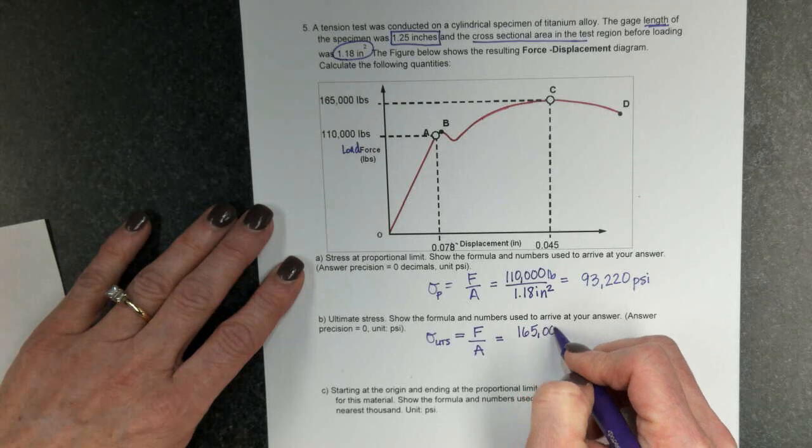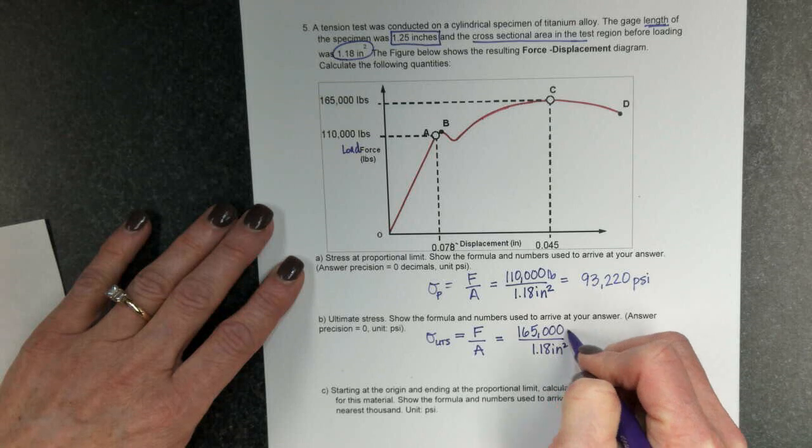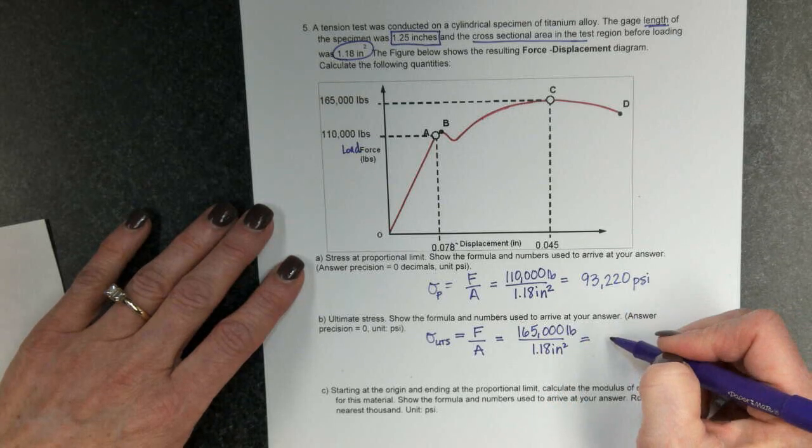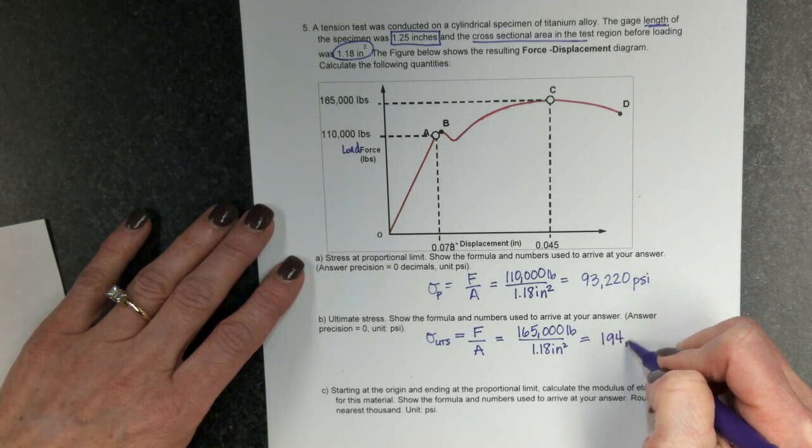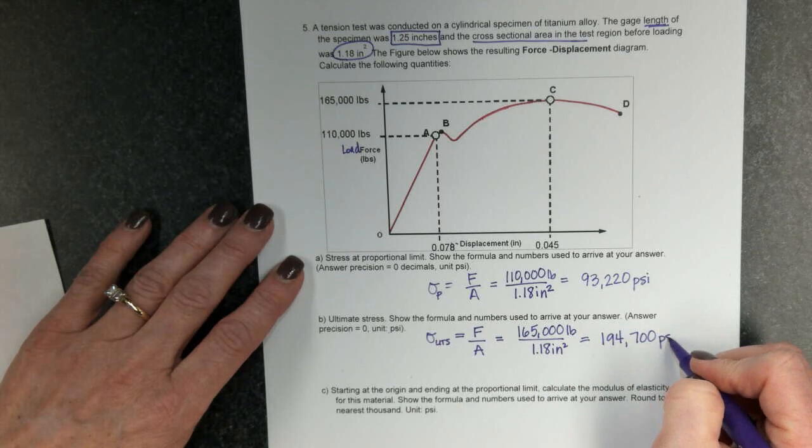And I need to divide by my cross-sectional area. When I do 165,000 pounds, divided by 1.18 inches squared, I get 194,700 pounds per square inch, or psi.